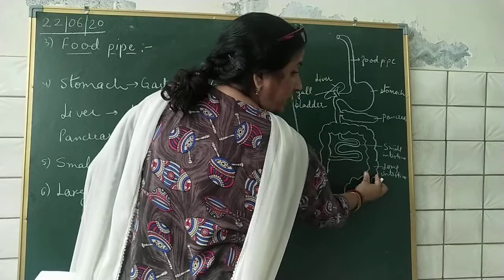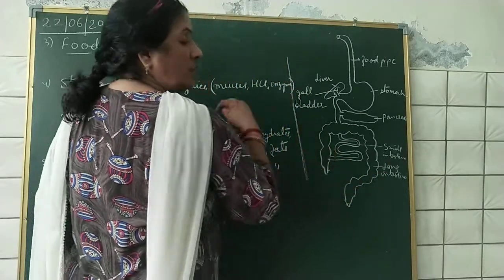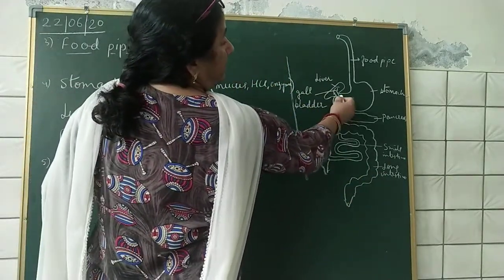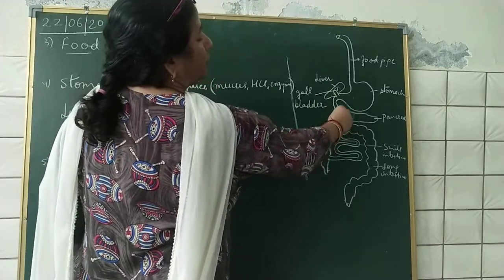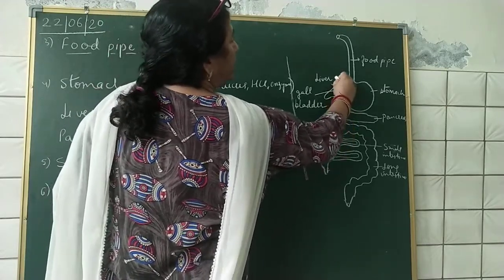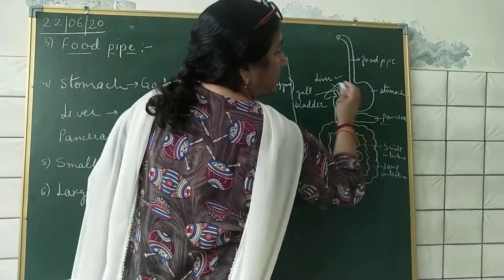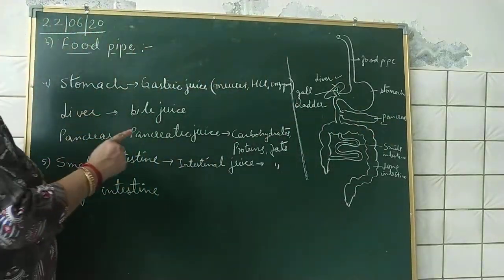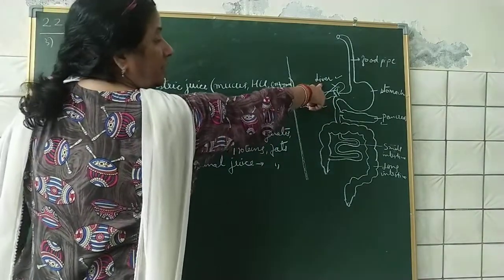The large intestine is thick but shorter than the small intestine. Before the food enters into the small intestine, there are 2 glands: liver and pancreas.